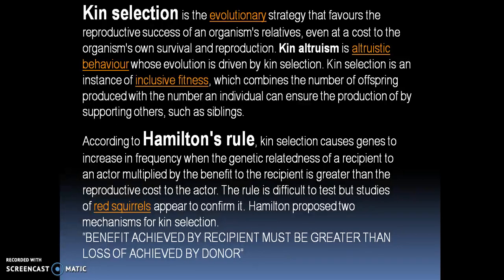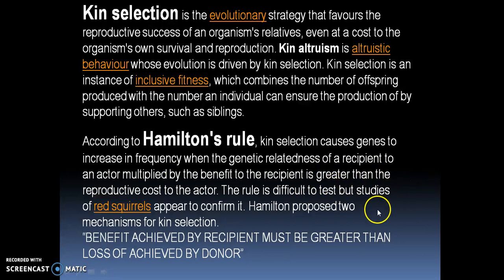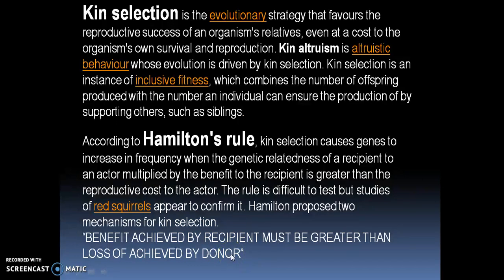According to Hamilton, the benefit achieved by the recipient must be greater than the loss incurred by the donor — that is, Rb greater than C. Kin selection causes genes to increase in frequency when the genetic relatedness of the recipient to the actor, multiplied by the benefit to the recipient, is greater than the reproductive cost of the actor. This rule is difficult to test, but studies of red squirrels appear to confirm it. Hamilton also proposed two mechanisms for kin selection, suggesting the recipient always achieves the benefit while the donor sacrifices its fitness value to increase that benefit.